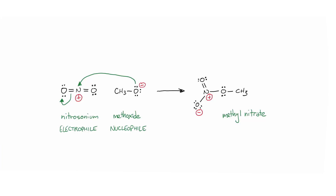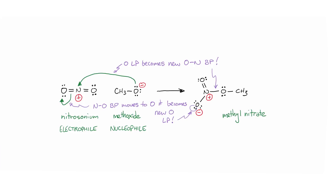But we need a second arrow. If we just stopped there, there would be 5 bonds and 10 electrons at this nitrogen — a violation of the octet rule. Nitrogen can break one of its bonds to an O atom; the reaction both makes and breaks a bond at the electrophilic atom. We move one pair of electrons from one of the bond pairs of this N=O double bond and direct it out toward the oxygen, turning a bond pair into an extra lone pair and creating a negative formal charge on that O.